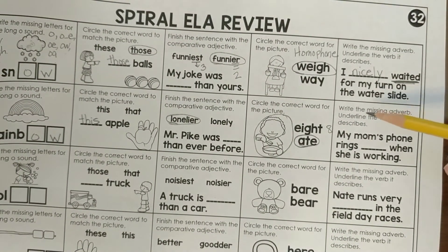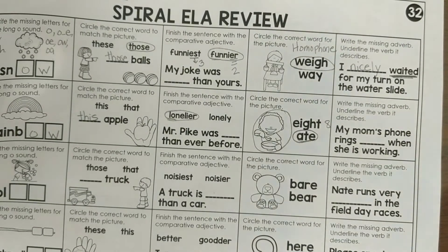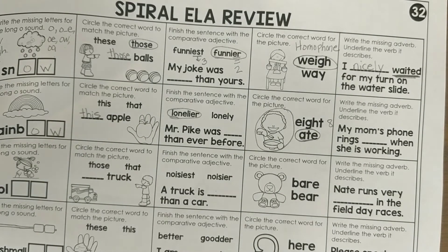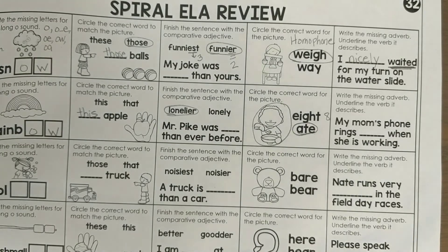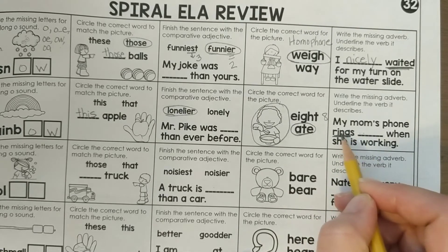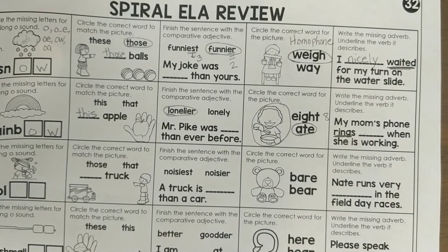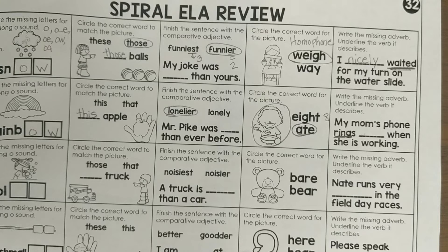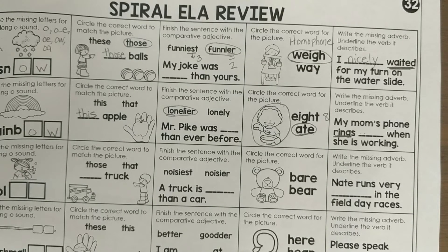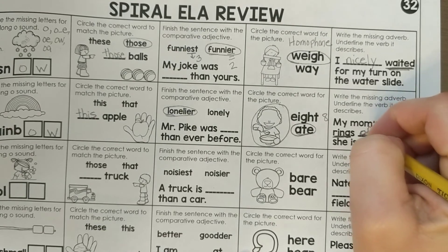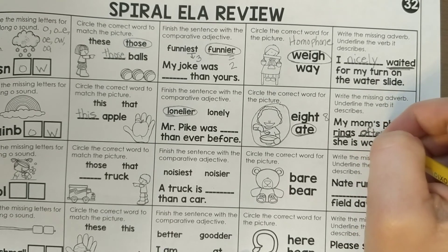Write the missing adverb and underline the verb it describes. An adverb describes the verb. So: my mom's phone rings blank when she is working. The verb in this sentence is 'rings,' so we underline that. We need a word to describe how her phone is ringing — you could put any adverb here. Is it ringing loudly? Often? Quietly? I'm going to put 'often,' because if she's working, maybe she gets calls a lot. So 'often' is describing how much.